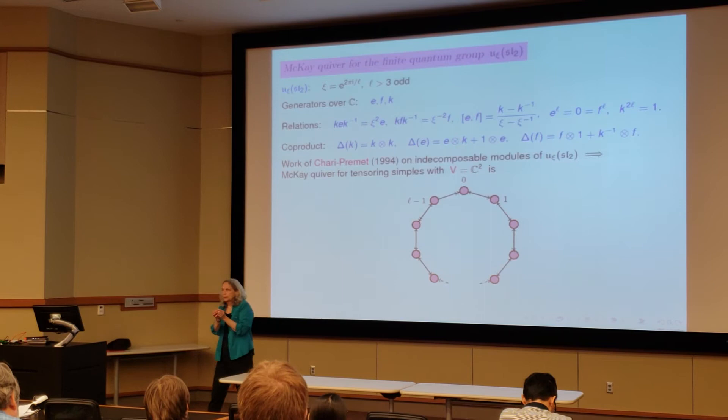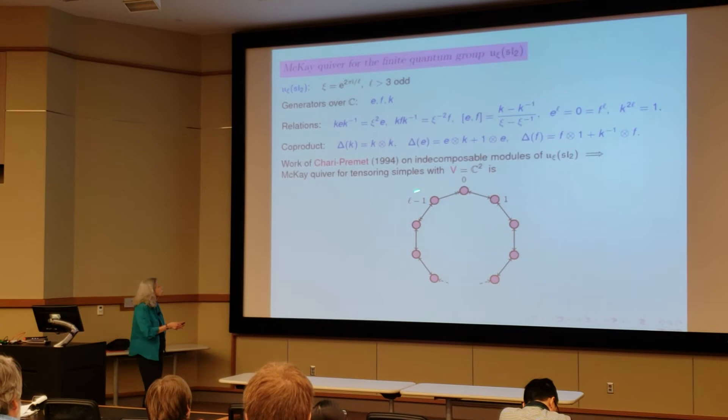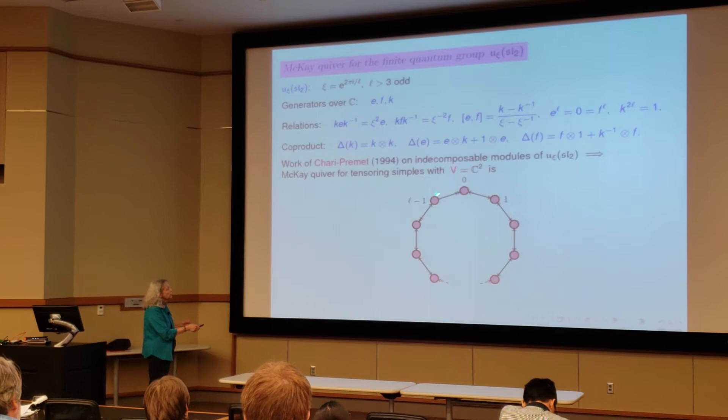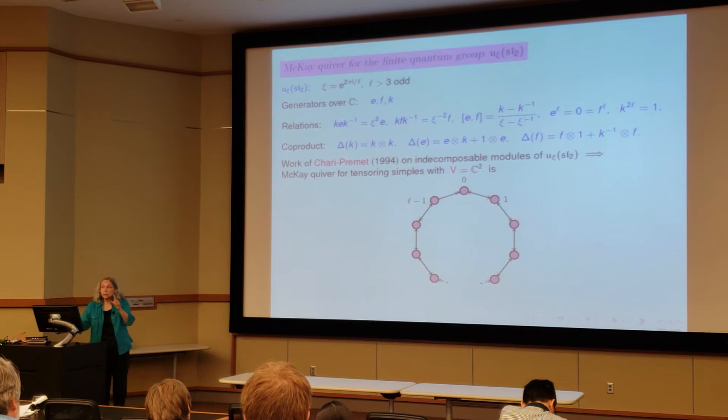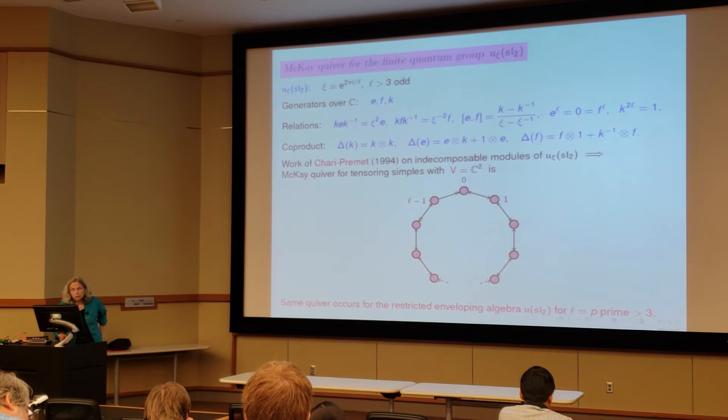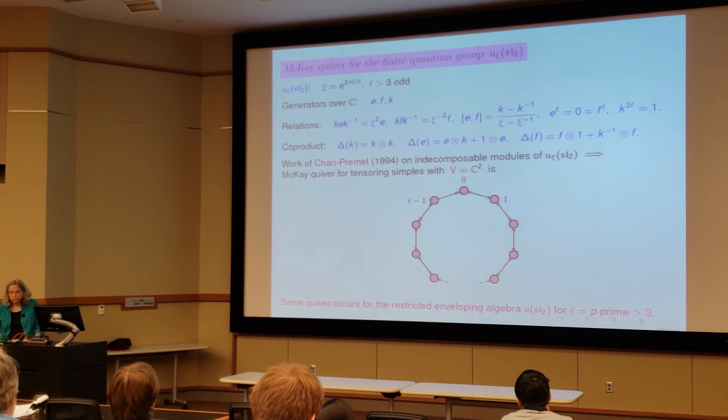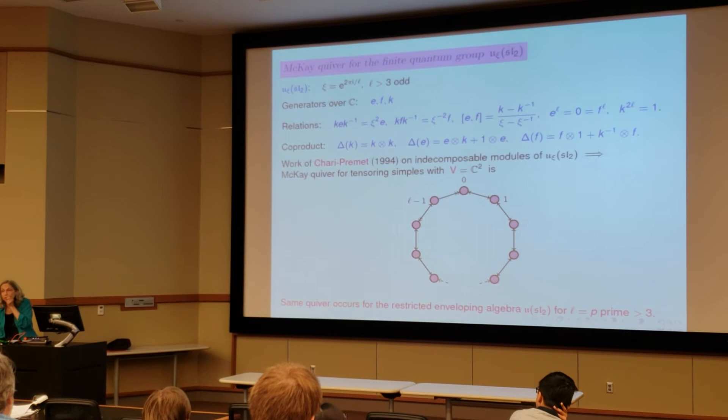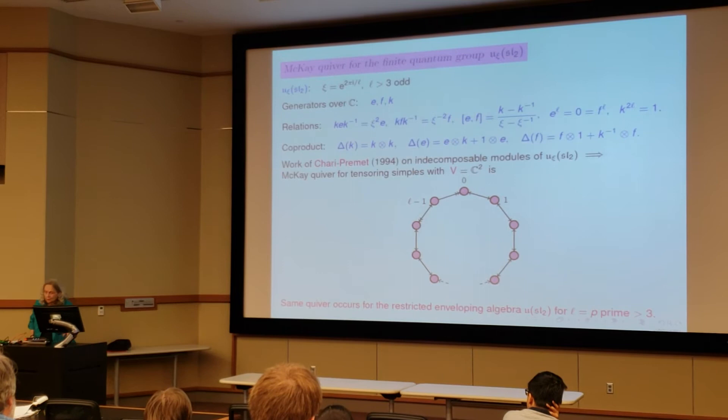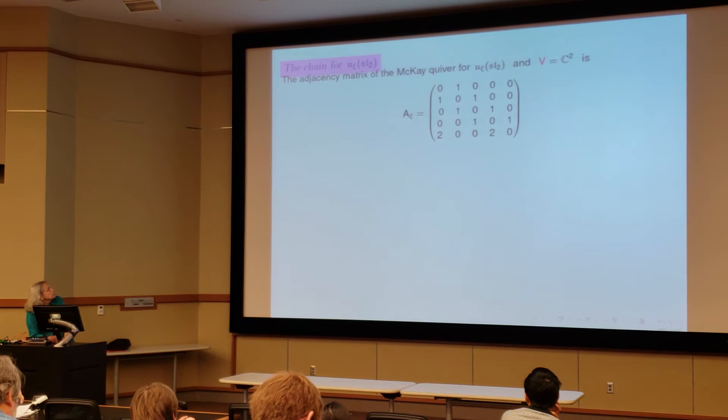Now I could have drawn it differently but I want to use this sort of perspective in the next slide. But I could have drawn it like a line, and then when I got to L minus one, I have two arrows going back to L minus two and two arrows going to zero, and that's because those weights are related. This is the same quiver for the restricted enveloping algebra U SL2 where L is a prime greater than three. The advantage to working with the quantum group is that now we can work with any odd image. But it's basically the same. L is a prime? No. Any odd image is a prime. Okay.